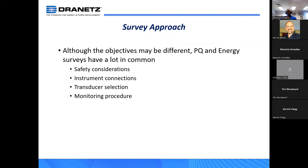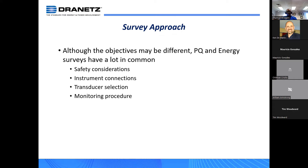The approach may differ based on the objective, but surveys have things in common: safety considerations, instrument connections, and transducer selection. An example of transducer selection is which current probes you're using. I often see scenarios where someone uses a current probe not quite appropriate for the application — maybe the range is too large, or the current being monitored is too small, which can have adverse effects on your data set. There's also the monitoring procedure itself, and the approach that we've seen over nearly 60 years as far as what's most efficient and yields the most results.